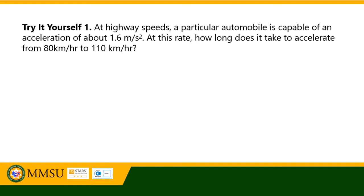For the first try-it-yourself problem: at highway speeds, a particular automobile is capable of an acceleration of about 1.6 meters per second squared. At the least, how long does it take to accelerate from 80 kilometers per hour to 110 kilometers per hour? The unknown is time. The initial velocity is 80 km/h, the final velocity is 110 km/h, and the acceleration is 1.6 meters per second squared.